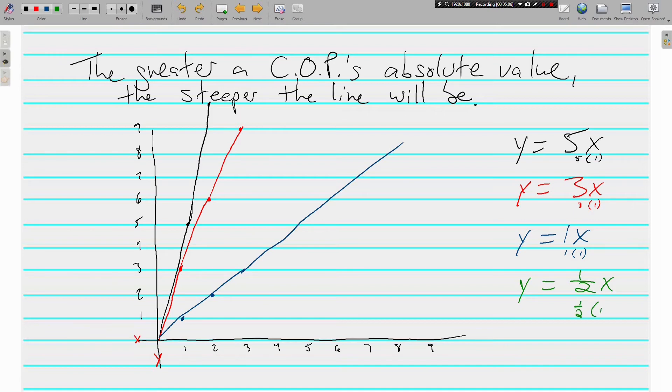Then the green one, half an x. Half of 1 is just half. So that one's actually going to be down here. Half of 2 would be 1. And so you can see we're going up by halves with the green line. Less steep. Half is closer to 0 than 1, than 3, than 5. The further a number is from 0, the steeper its line is going to be.